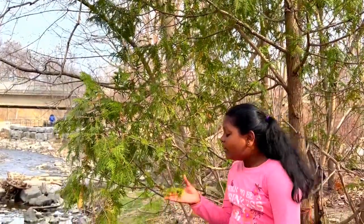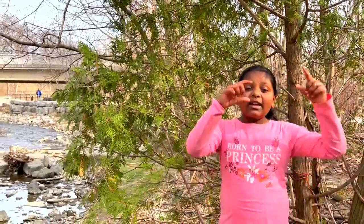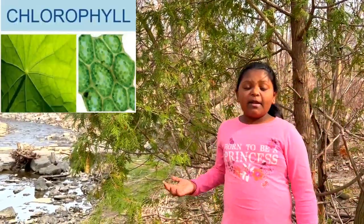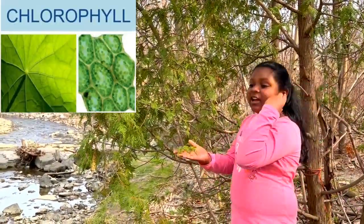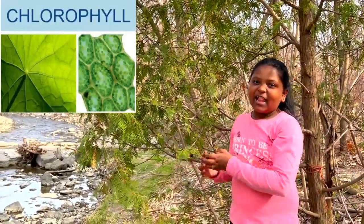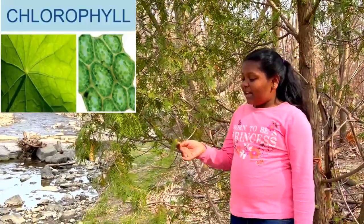You know why leaves are green? That's because they have a tiny segment called chlorophyll. That's the way they look green.